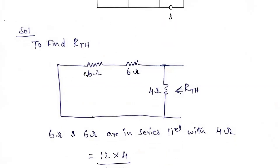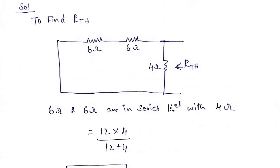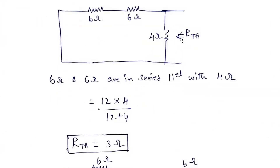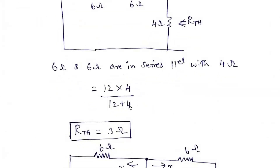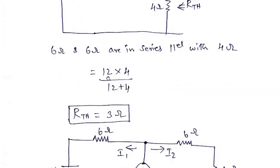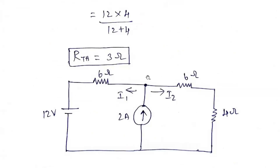In this circuit, 6 ohms and 6 ohms are in series, giving 12 ohms. Then 12 ohms and 4 ohms are in parallel. So R_th equals 12 parallel with 4, which simplifies to R_th equal to 3 ohms.